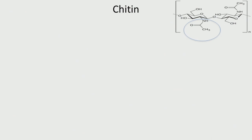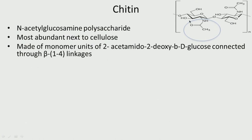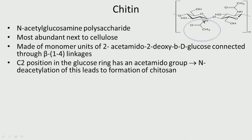Next comes chitin. Chitin has an N-acetyl group — it is an N-acetyl glucosamine polysaccharide. It is the most abundant polysaccharide after cellulose, made of monomers of 2-acetamido-2-deoxy glucose connected through a beta 1,4 linkage. If we remove the acetyl group through a process called deacetylization using deacetylase enzyme, that leads to the formation of chitosan, where NH2 is present instead.